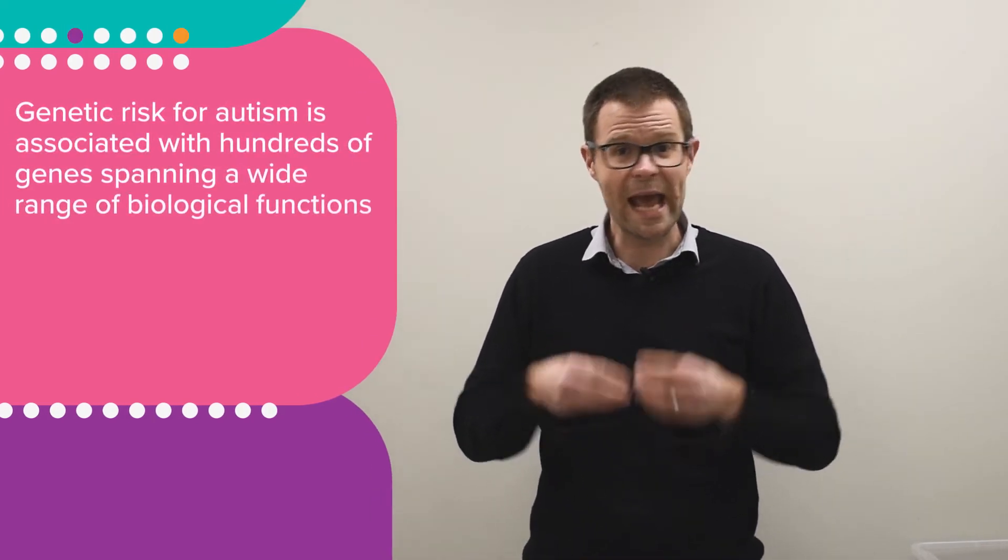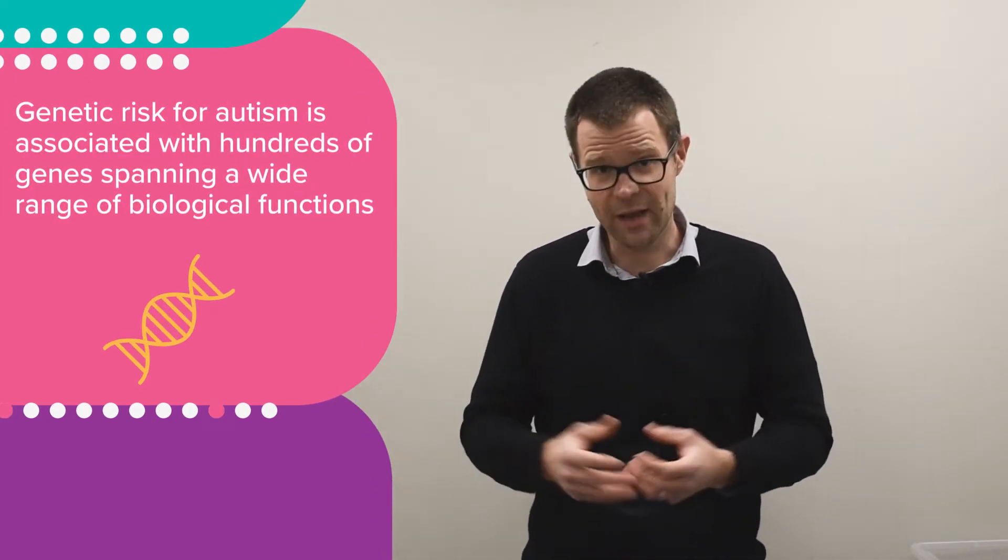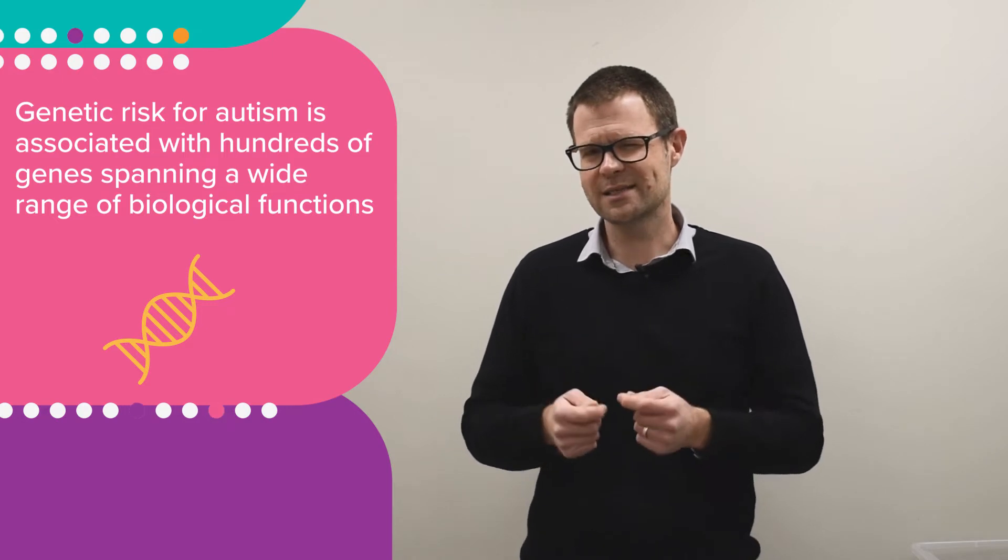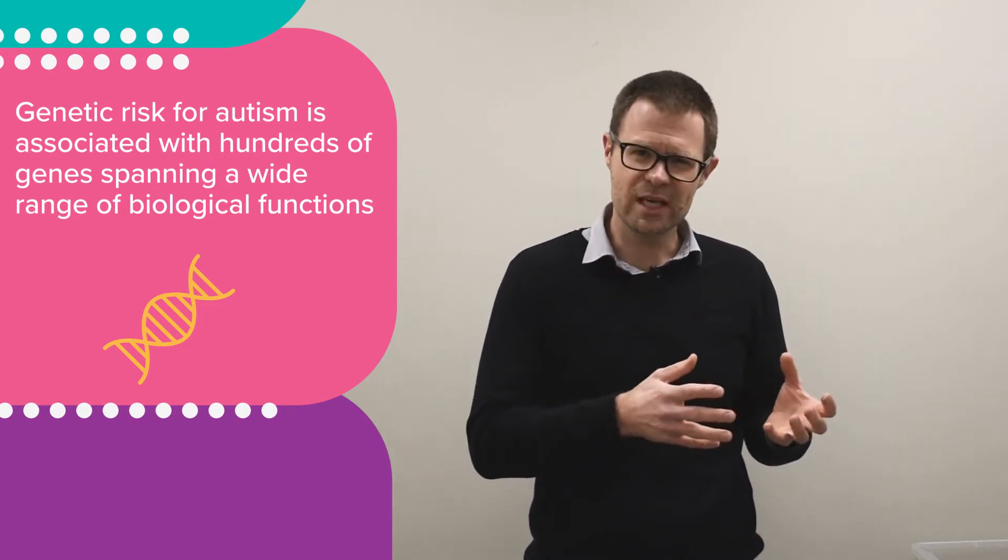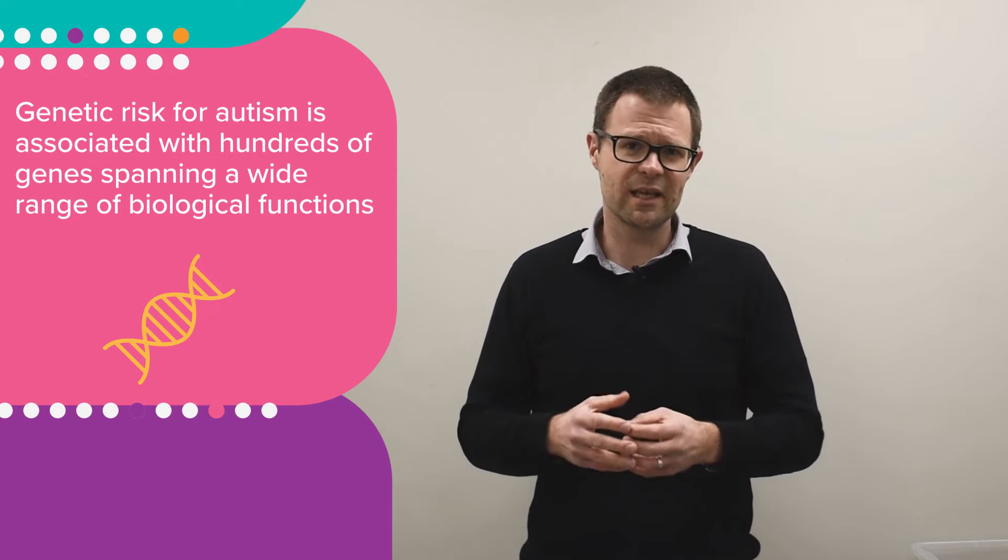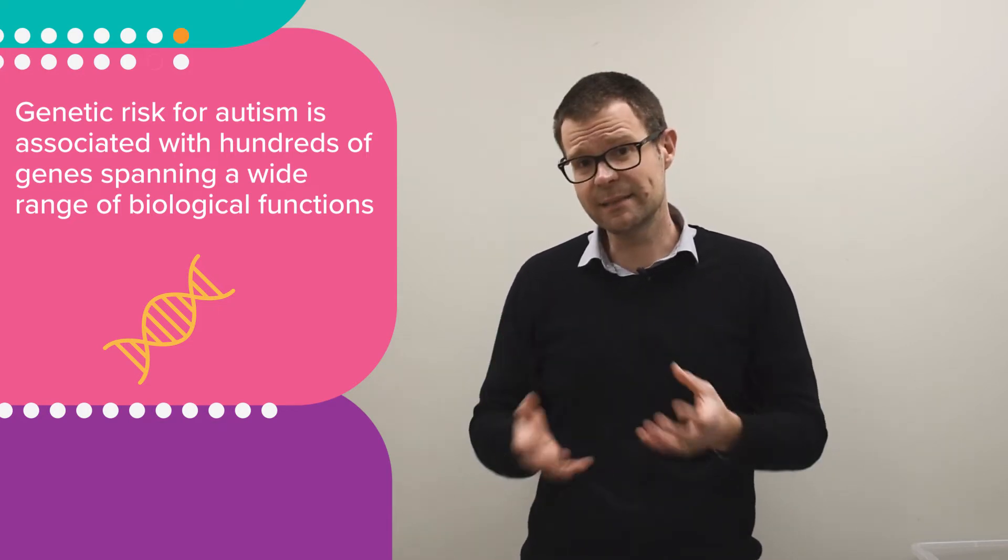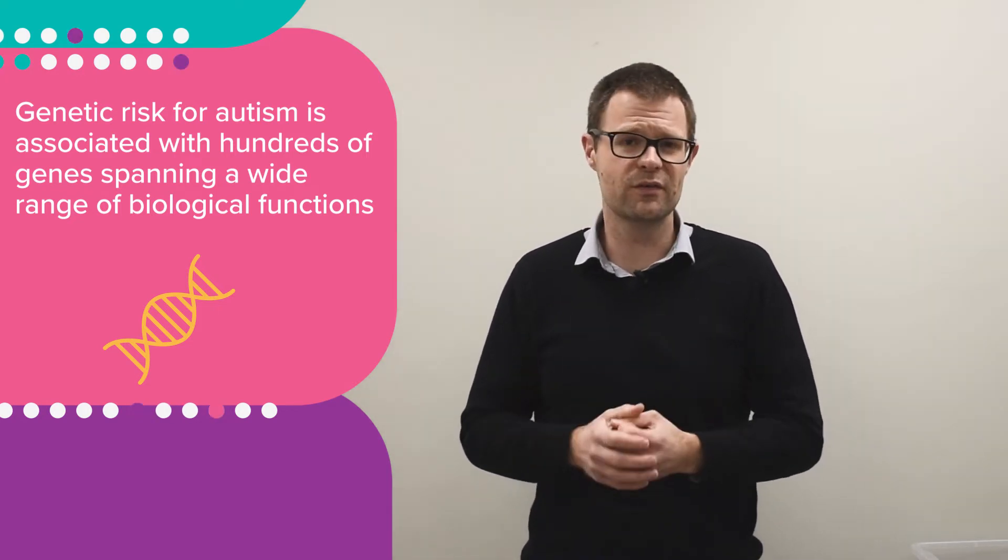Now we all know that there are many different genes involved in how autism can develop, but what we don't really understand is if there are many different genes, why do all autistic individuals show a relatively similar cluster of behavioral differences? Why does that happen?